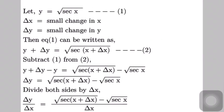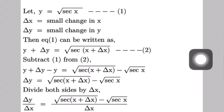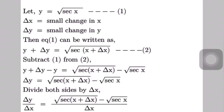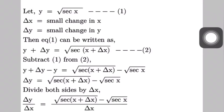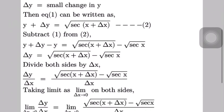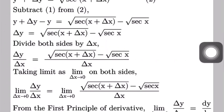Now subtract equation 1 from equation 2. Then we get y plus δy minus y is equal to √(sec(x + δx)) minus √(sec x). Here y cancels out, and we are left with δy is equal to √(sec(x + δx)) minus √(sec x). Now divide this equation by δx. Then we get δy divided by δx is equal to [√(sec(x + δx)) minus √(sec x)] whole divided by δx.